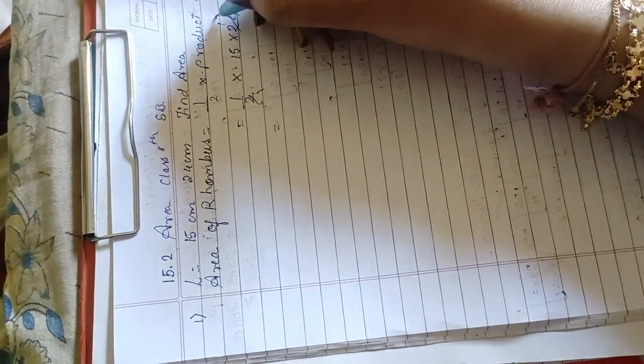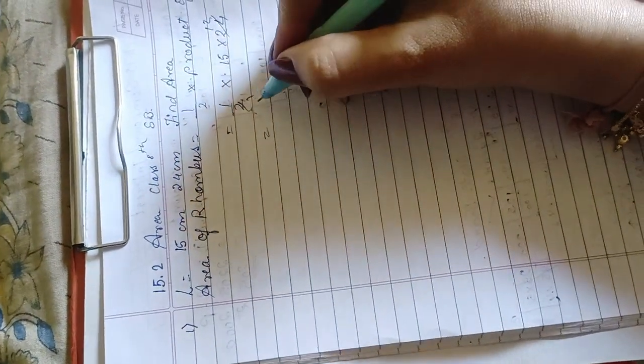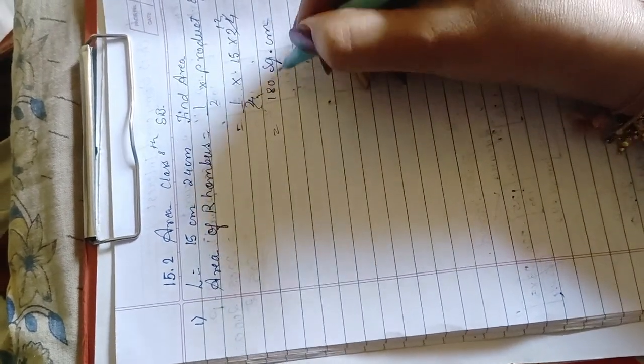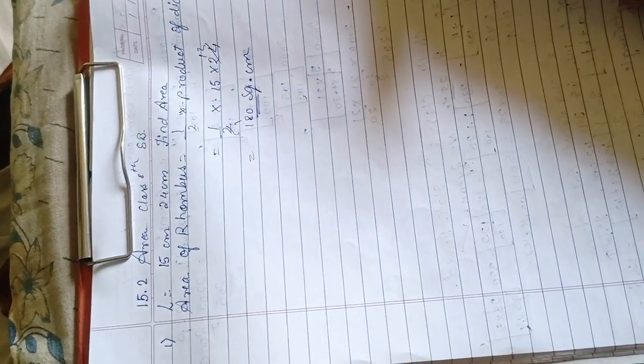2 12s are 24. So what is 15 into 12? It is 180 cm². That's all. So easy.